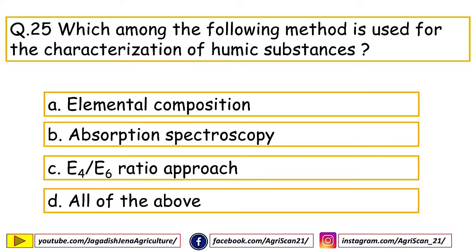Next question: which method is used for the characterization of humic substances? Options are elemental composition, absorption spectroscopy, E4/E6 ratio approach, all of the above. The right answer is all of the above. These techniques include finding elemental composition, studying by absorption spectroscopy, and quantifying using the UV spectra E4/E6 ratio at wavelengths of 465 nm and 665 nm.